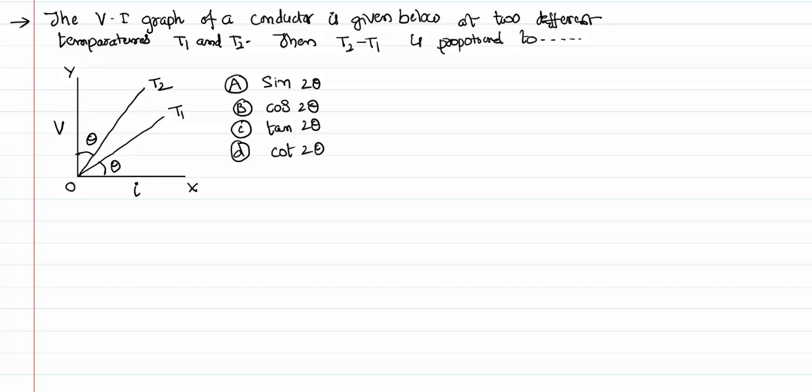Here in this problem, a V-I graph is given for a conductor where resistance is directly proportional to temperature.